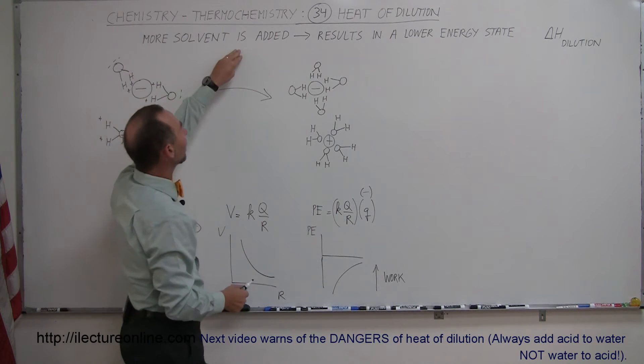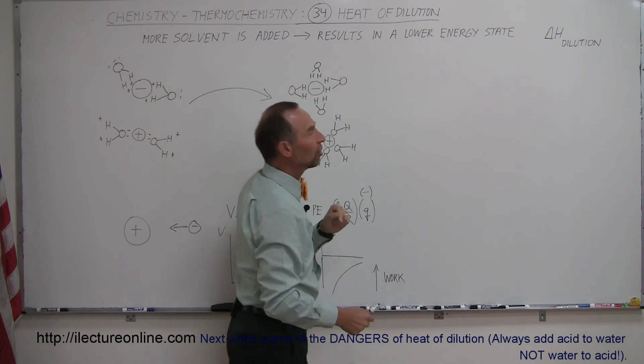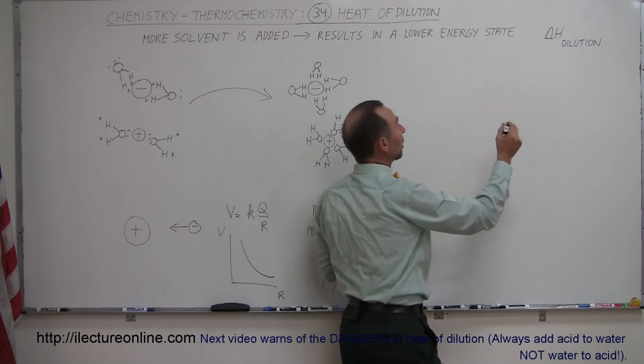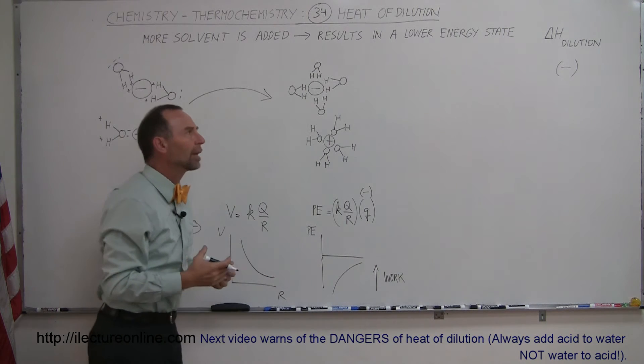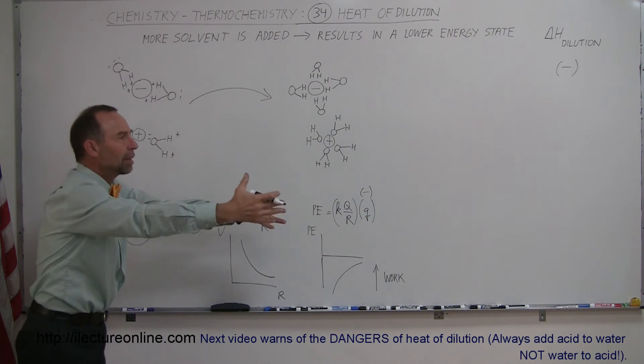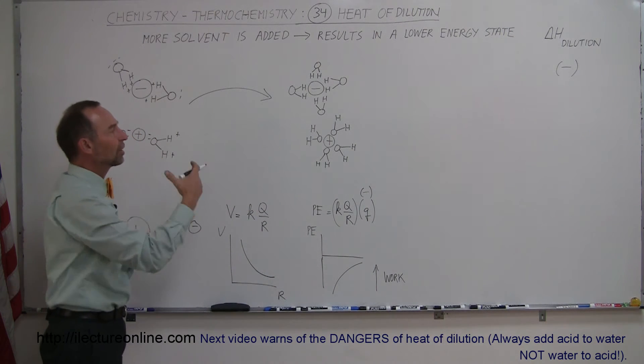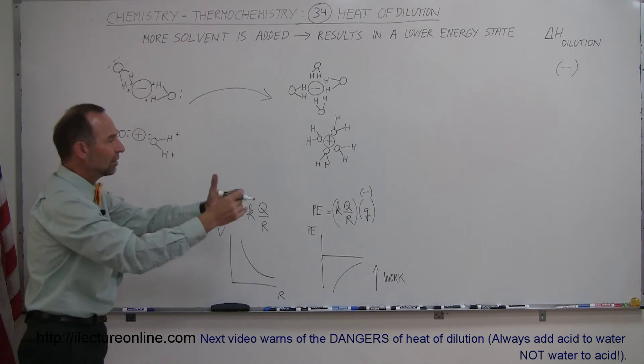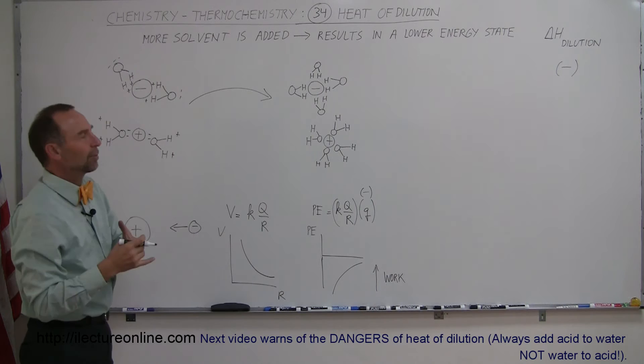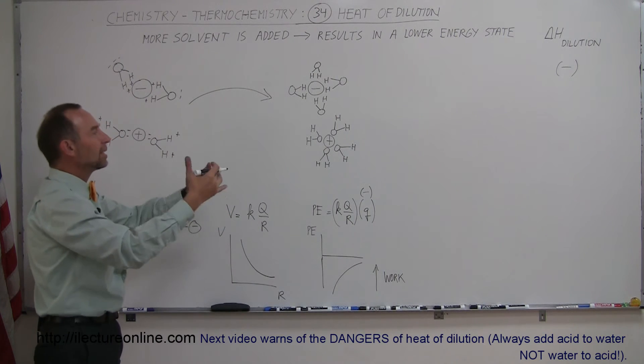So more solvent is added that results in the lower energy state. So the delta H of dilution typically is a negative quantity. In other words, it's an exothermic reaction and heat is expelled into the solution. Heat is taken away from the ions, or energy is taken away from the ions, which will result in the heating up of the solution.